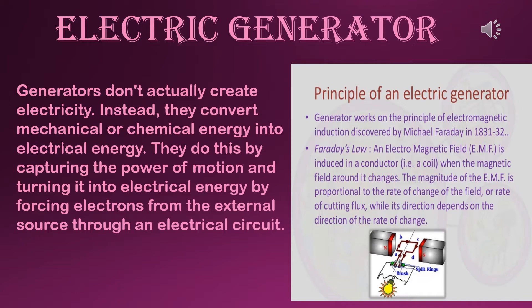Generators don't actually create electricity. Instead they convert mechanical or chemical energy into electrical energy. They do this by capturing the power of motion and turning it into electrical energy by forcing electrons from the external source through an electrical circuit.